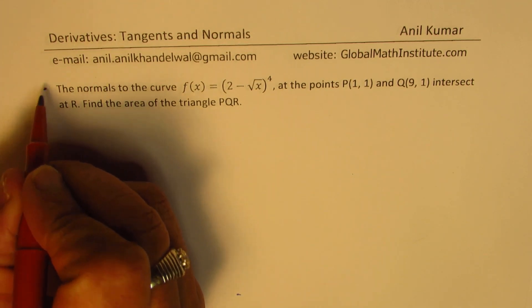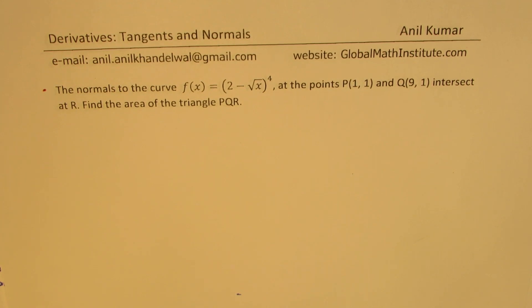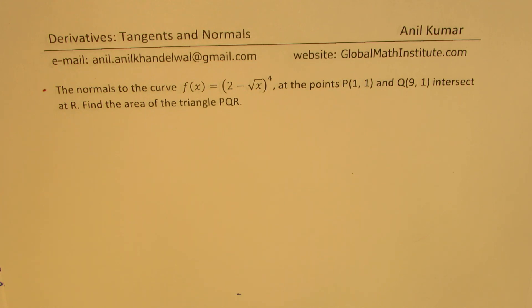The question here is: the normals to the curve f(x) = (2 − √x)⁴ at the points P(1, 1) and Q(9, 1) intersect at R. Find the area of triangle PQR.